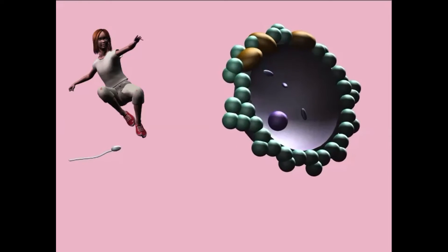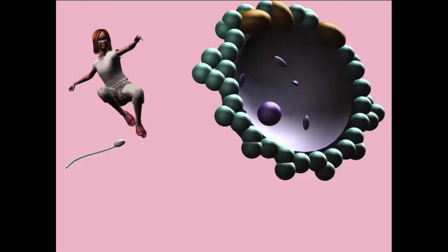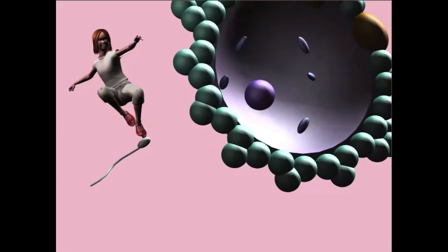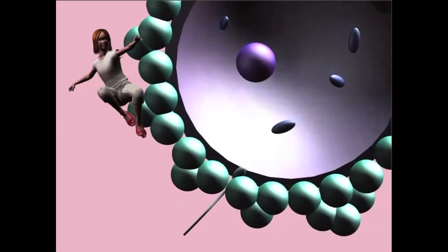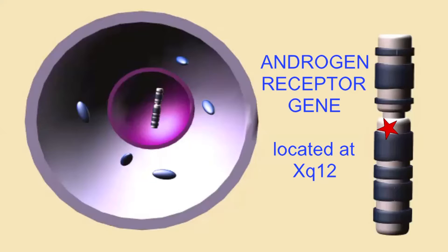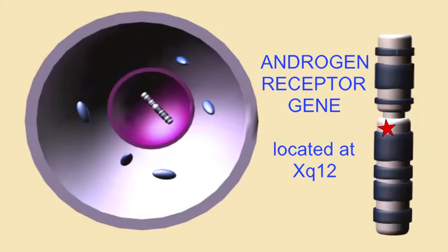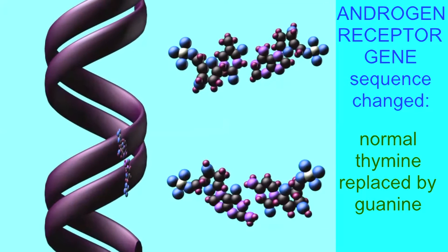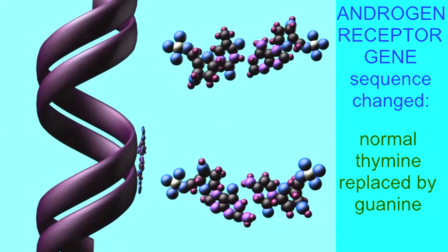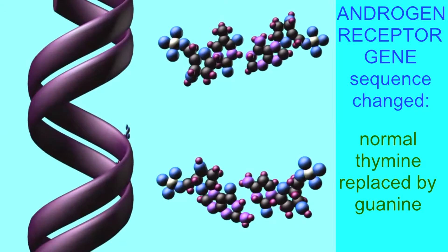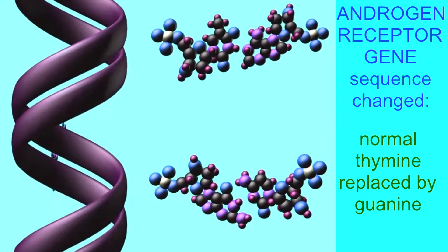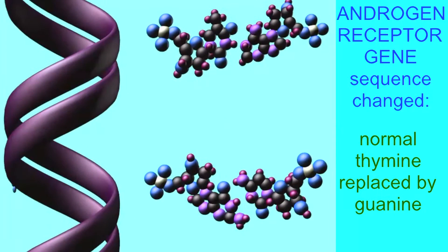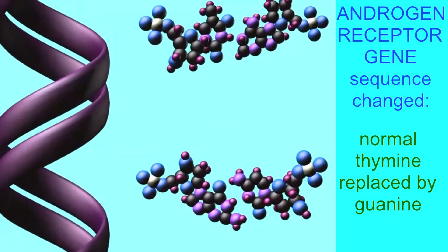At my conception, each of my parents' gametes contributed 23 molecules of DNA known as chromosomes. The gene for the androgen receptor was located on the long arm of the X chromosome in the region XQ12. At one specific site in this gene, the thymine-adenine pair of nucleotides, which most people inherit, had been replaced by a guanine-cytosine pair of nucleotides.